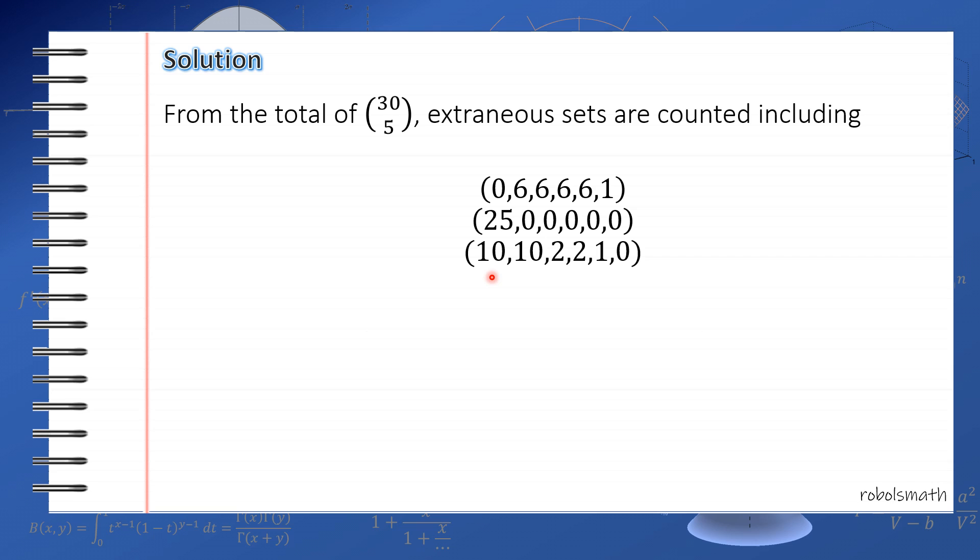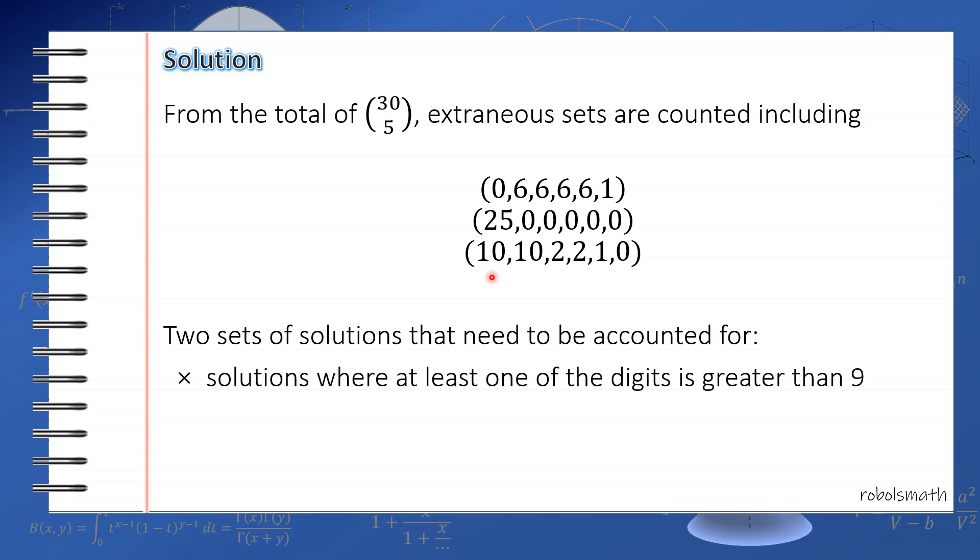So we want to account for this in the latter part of the solution. So essentially we have two sets of solutions that need to be accounted for. The first set being the solutions where at least one of the digits is greater than 9, and the second set is where a equals 0.